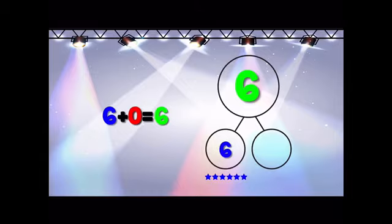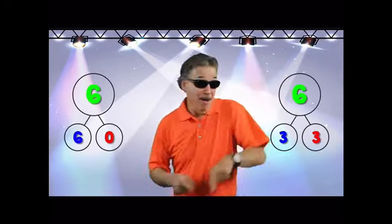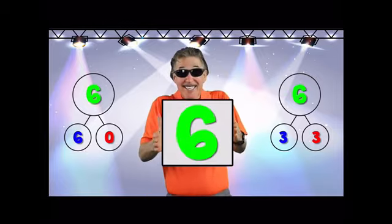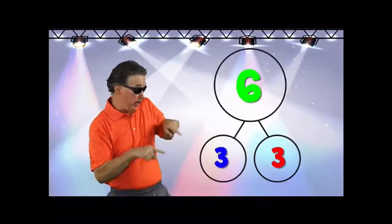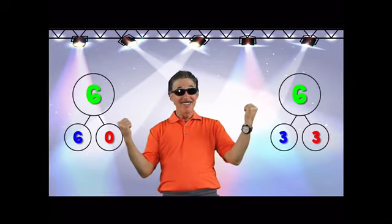Six plus zero makes six. Those are the number bonds, number bonds, that makes six. I know my number bonds, they help my math stay strong. Two parts make a whole, let's move and sing along. Number bonds, number bonds, number bonds.